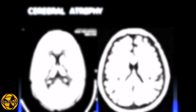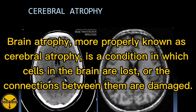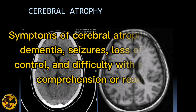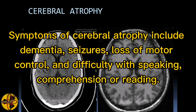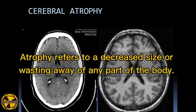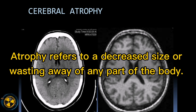Brain atrophy, more properly known as cerebral atrophy, is a condition in which cells in the brain are lost or the connections between them are damaged. Symptoms of cerebral atrophy include dementia, seizures, loss of motor control, and difficulty with speaking, comprehension, or reading. Atrophy refers to a decreased size or wasting away of any part of the body.